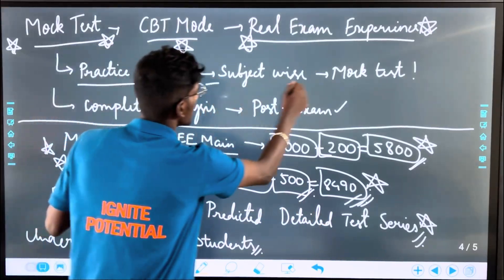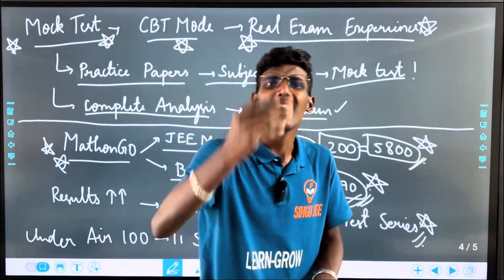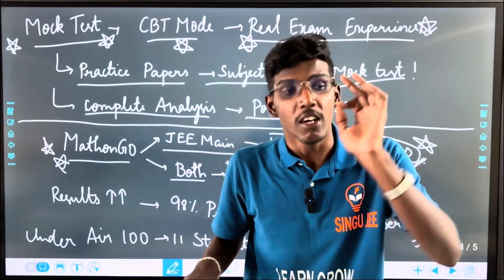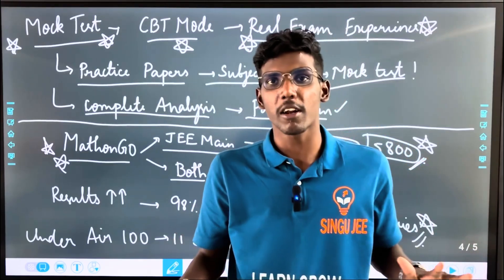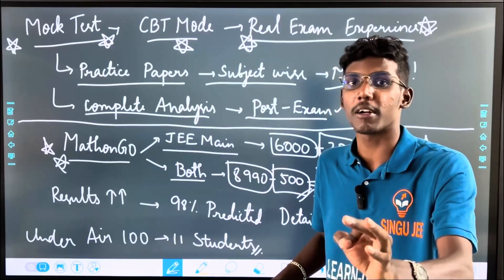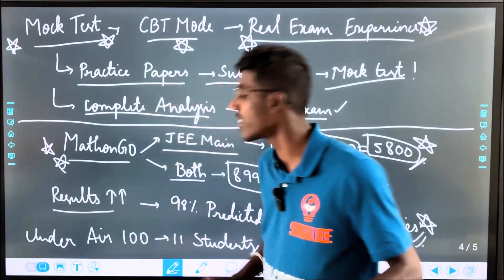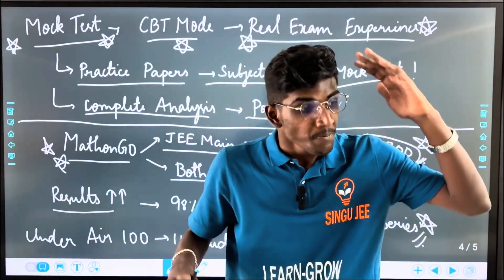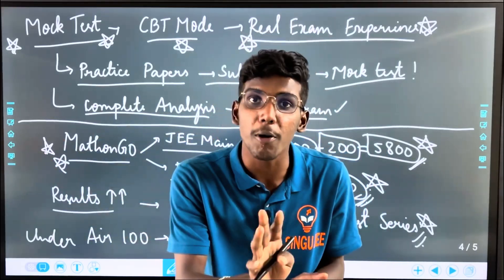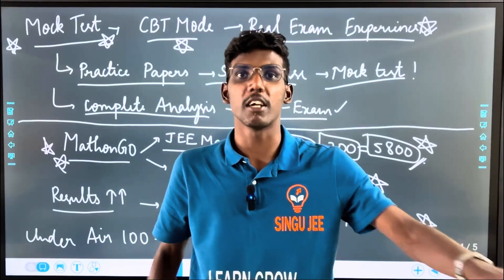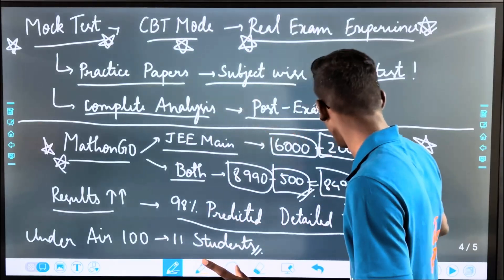Practice papers and subject-wise mock tests are available with complete analysis post-test — including what rankings, what percentage, how many errors, and what errors — clearly shown. This is very useful and you need to apply for the CBT practice. In 2024-2025, the total NTA difficulty has changed. Even in 2024, 2,100 people got 90 percentile; in 2025, 2,500 people got 90 percentile. That's why the predicted detail test series has a 98% accuracy rate — 11 students got results available in 2024.